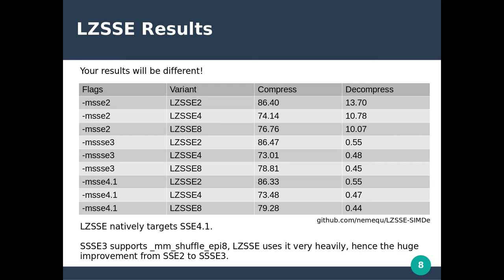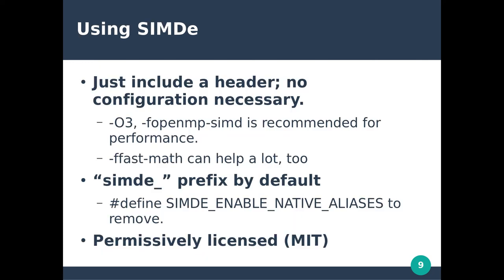Really, the only way to get a decent idea of what kind of performance you can expect is to just try it and see. Luckily, this is actually pretty straightforward. SIMD Everywhere is implemented as a header-only library, and there's no build system magic required. There is a SIMD prefix on all functions and macros by default, but you can ask SIMD Everywhere to create unprefixed aliases by defining the SIMD_NATIVE_ALIASES macro prior to including SIMDe.